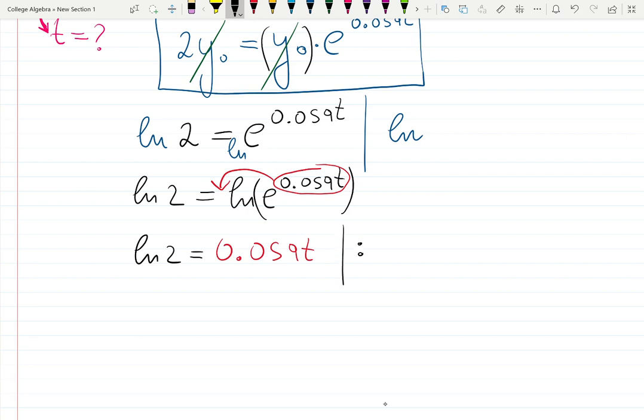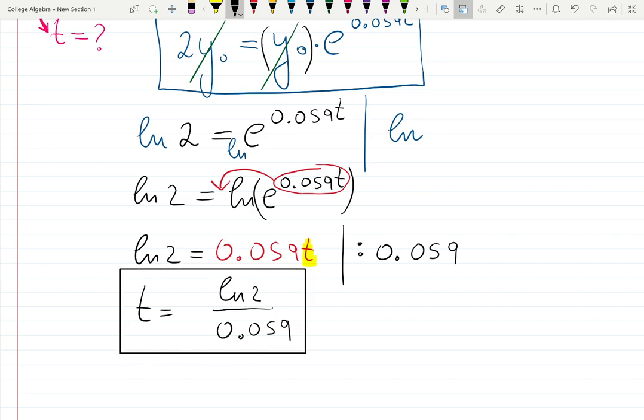That means I will divide by whatever t has in front of it: 0.059t equals, so I'm solving for this t. t equals ln 2 all over 0.059.